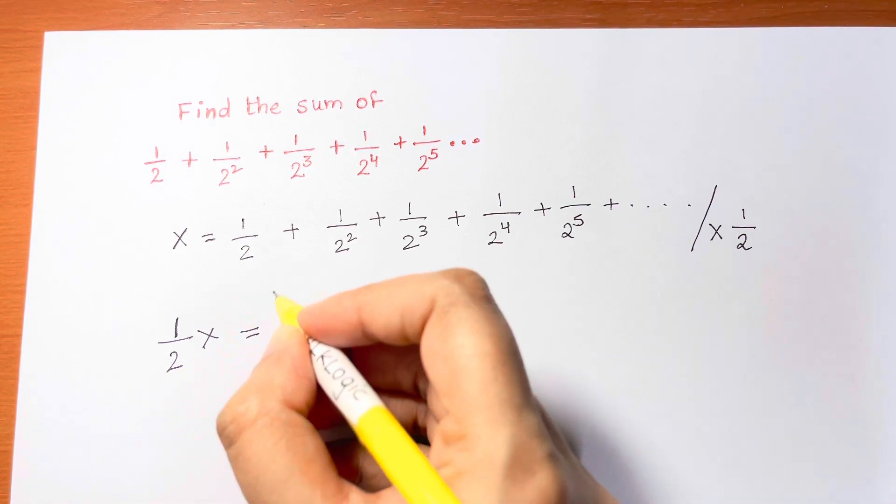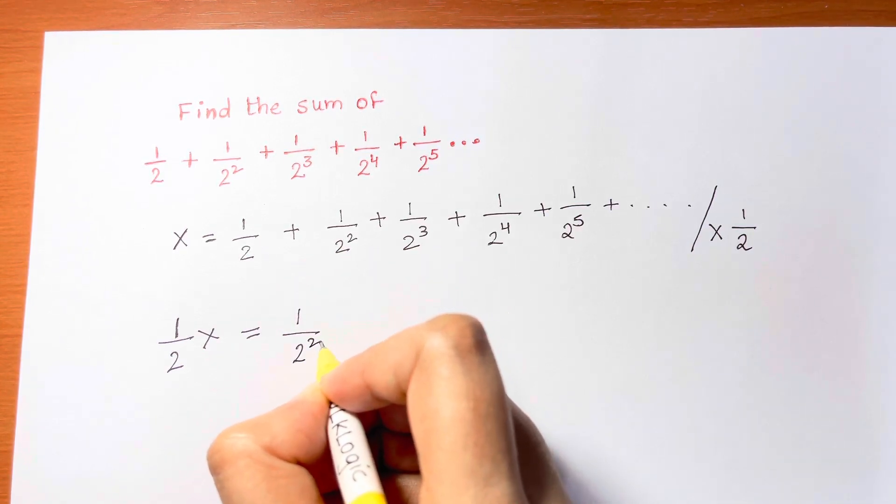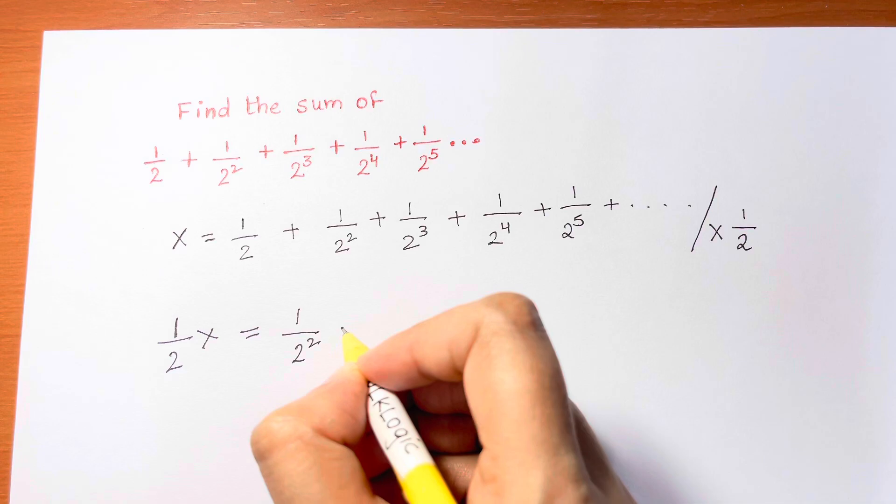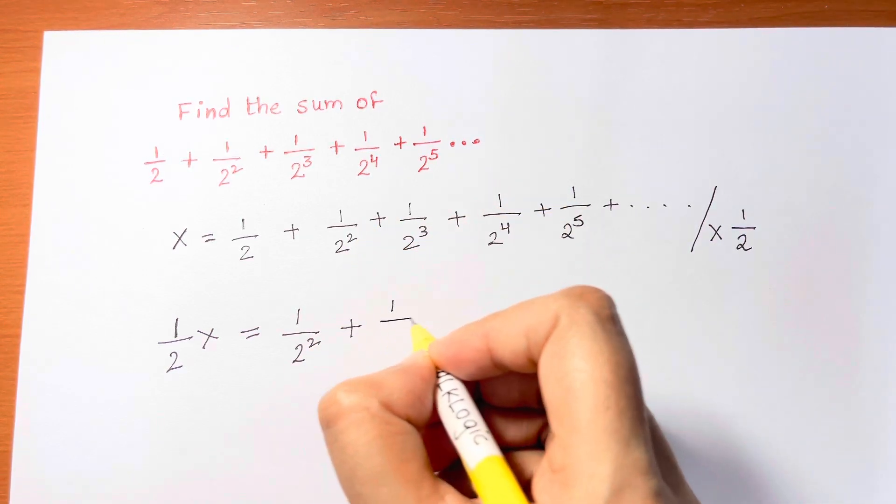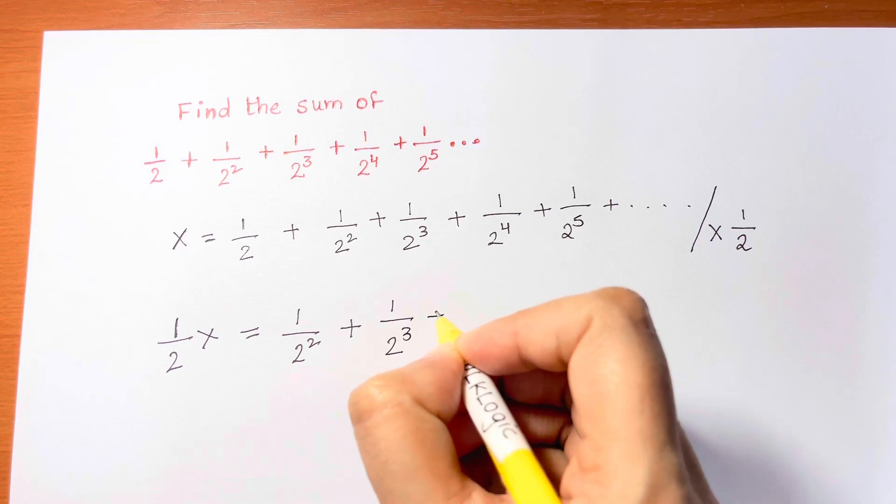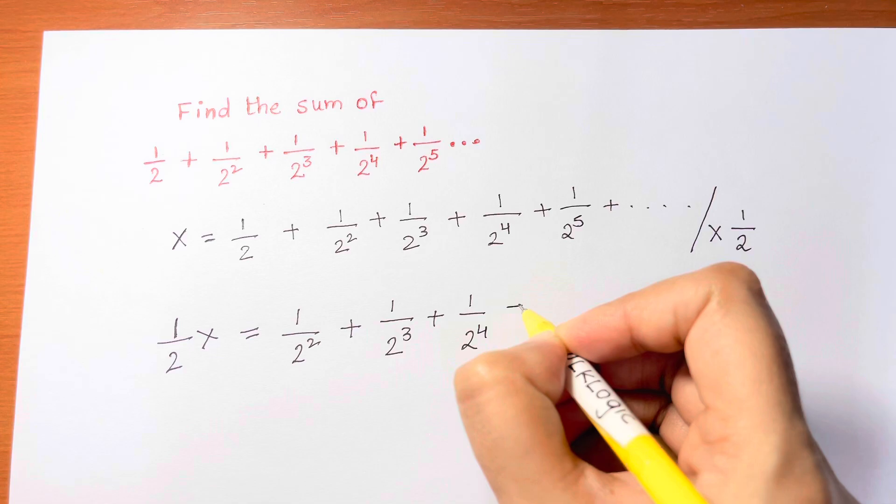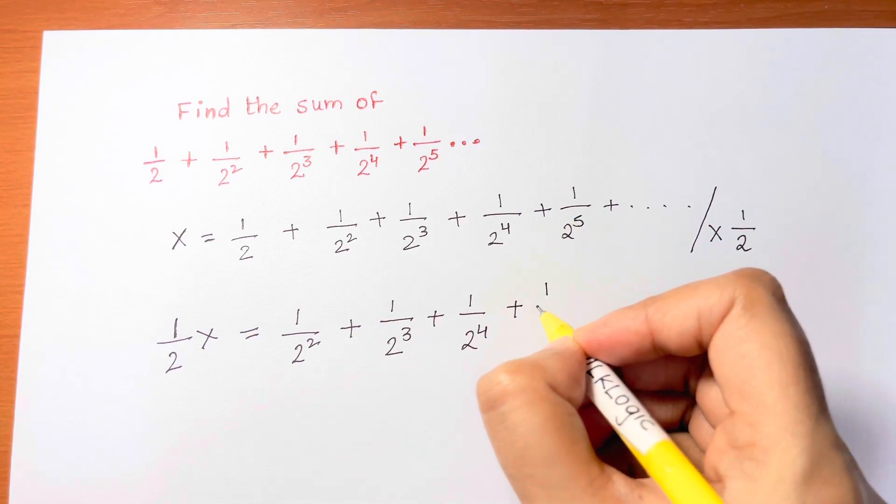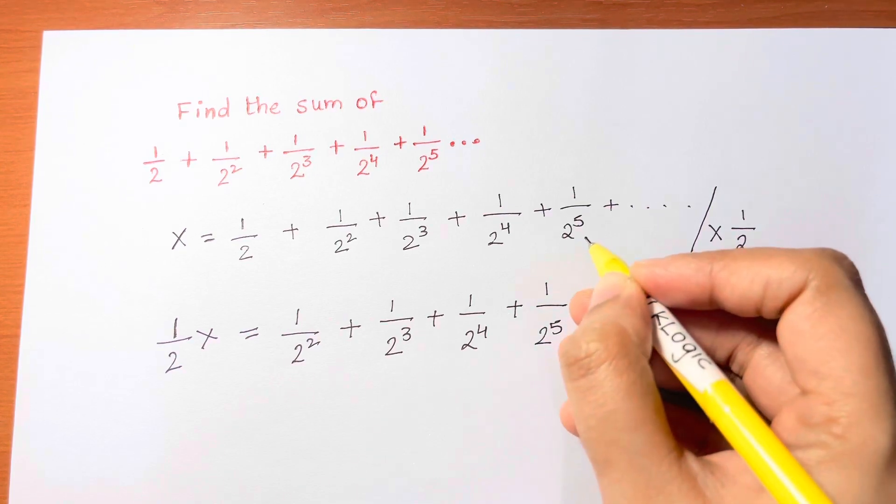1 over 2 squared plus we have here, multiplying by half, it becomes 1 over 2 cubed plus here when you multiply 1 over 2 to the 4th, plus here 1 over 2 to the 5th and so on. This becomes 1 over 2 to the 6th and so on.